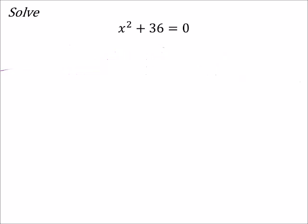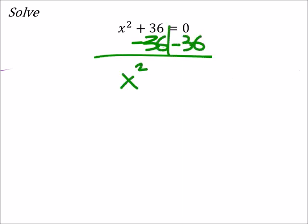The actual values of x, just by doing the same thing we just did on that last problem. So we would subtract 36 from both sides of the equal sign. Now I have x squared.